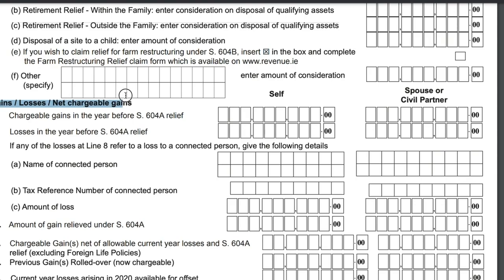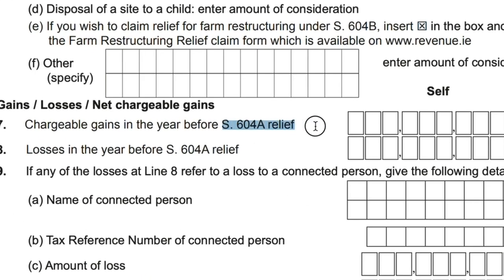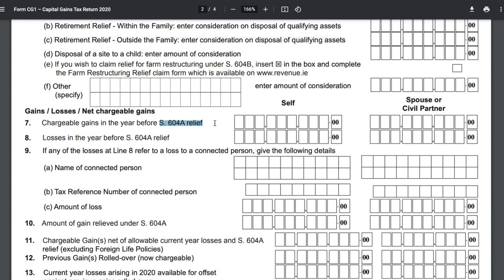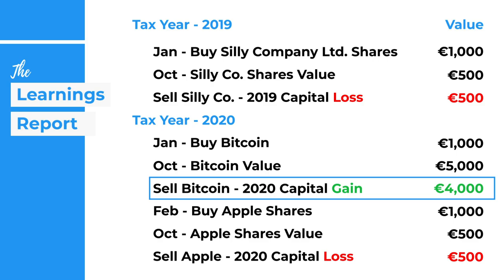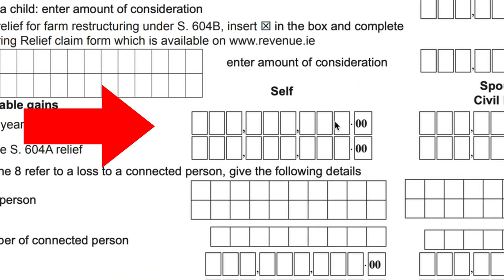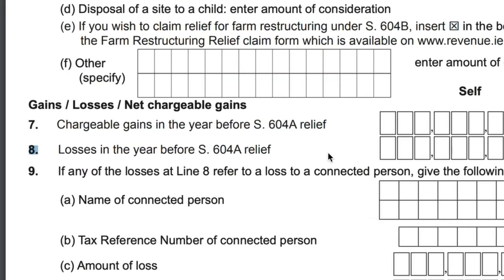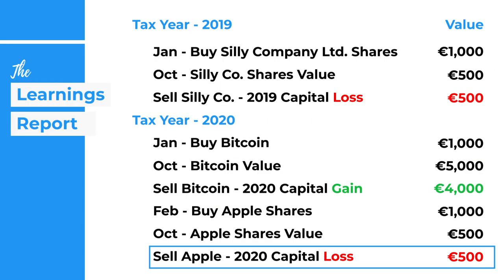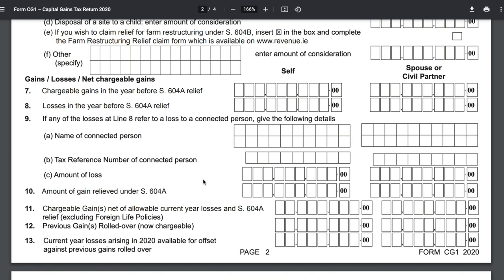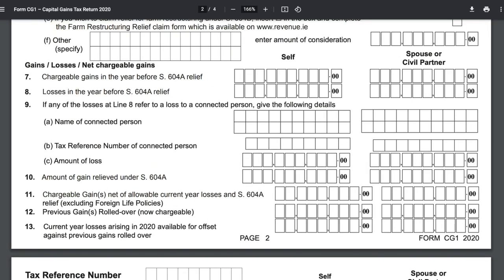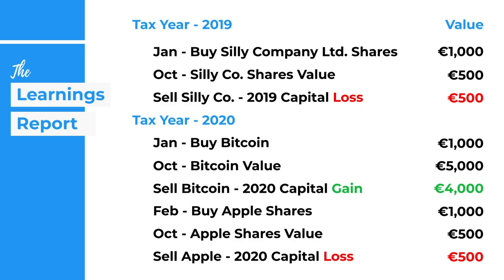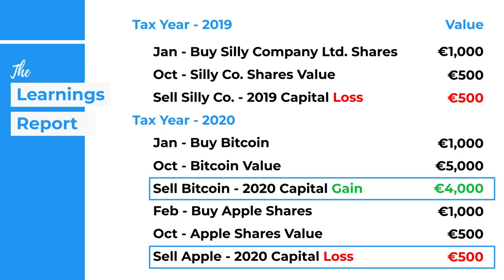Sections 2 to 6 can be skipped as they're not relevant. In Section 7, we address gains, losses, and net chargeable gains. Our chargeable gain for 2020 is the €4,000 profit from Bitcoin — the total sale was €5,000 but €1,000 was our principal — so we enter €4,000 here. In Section 8, we add losses in the year: our €500 Apple loss goes here. Sections 9 and 10 can be skipped. Section 11 is the chargeable gain net of current year losses: €4,000 minus €500 equals €3,500, which we enter here.